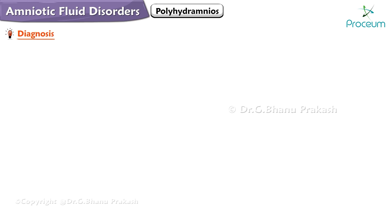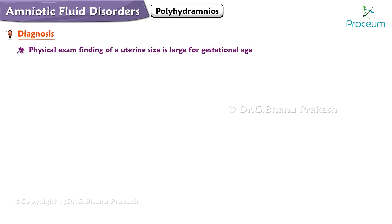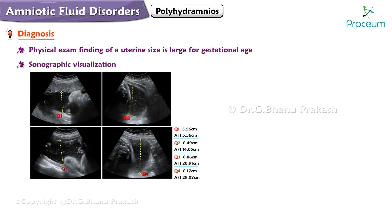Next, let's go over diagnosis. A physical exam finding a uterine size that is large for the gestational age is suspicious for polyhydramnios. Sonographic visualization of increased amniotic fluid volume meeting either of the following criteria is diagnostic: an amniotic fluid index greater than or equal to 24 centimeters, or a single deepest pocket greater than or equal to 8 centimeters.